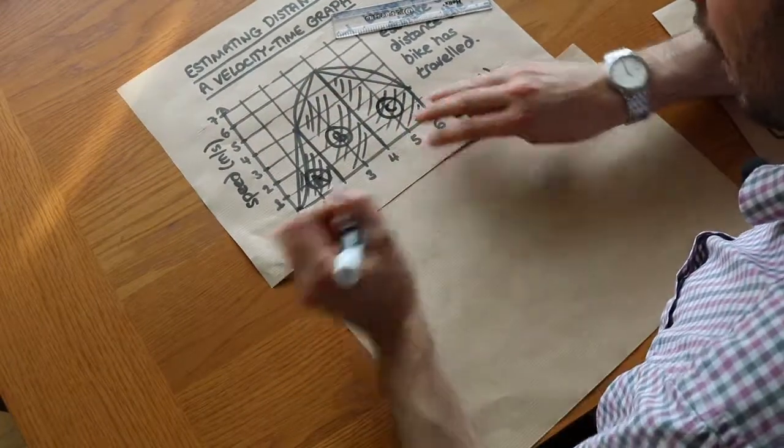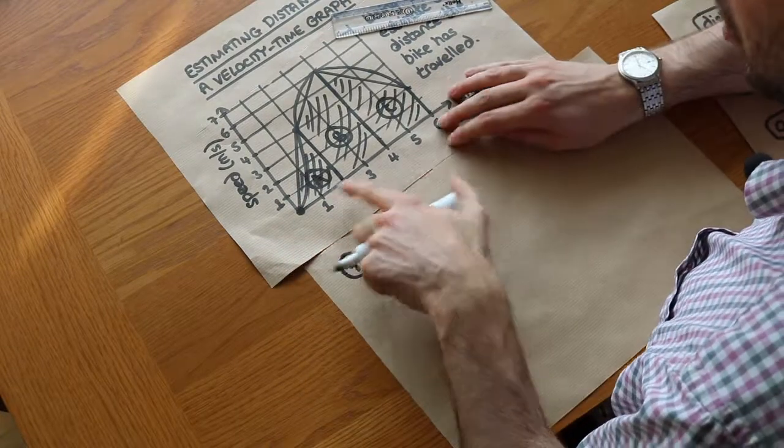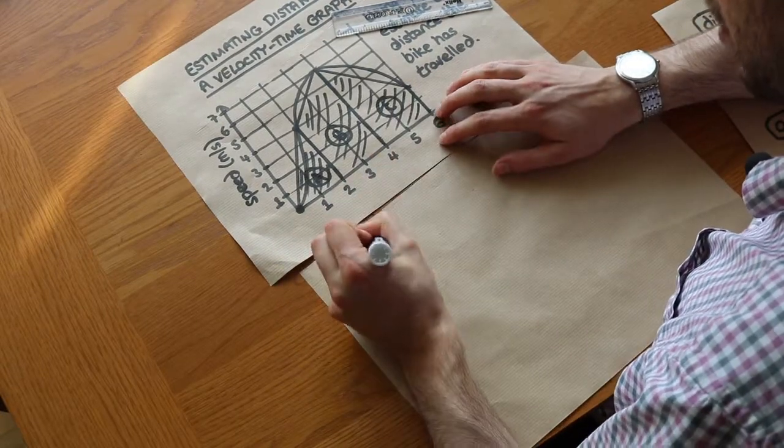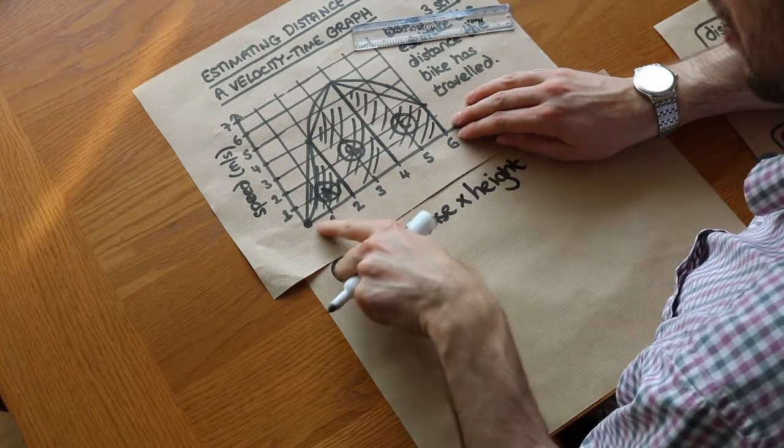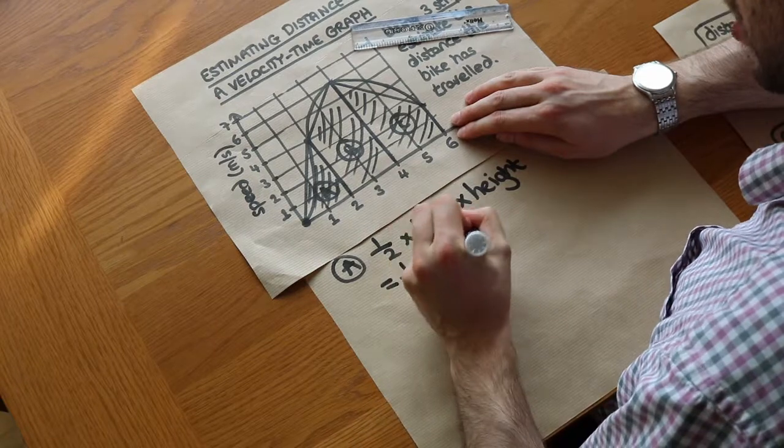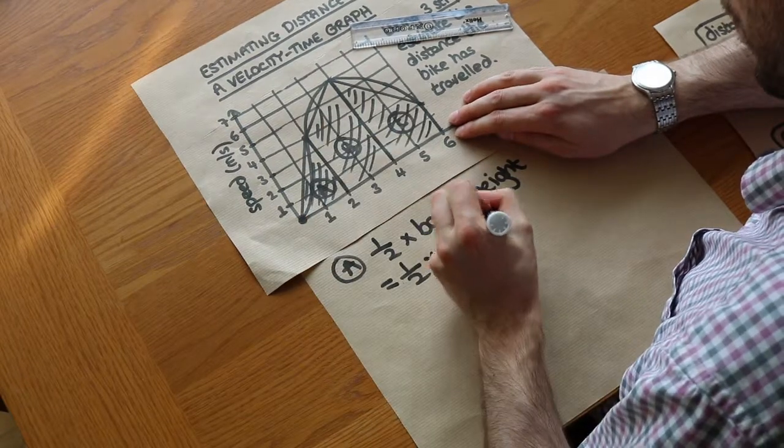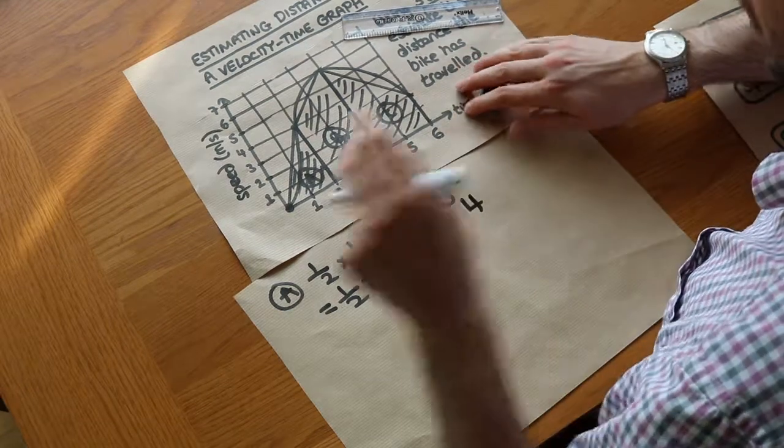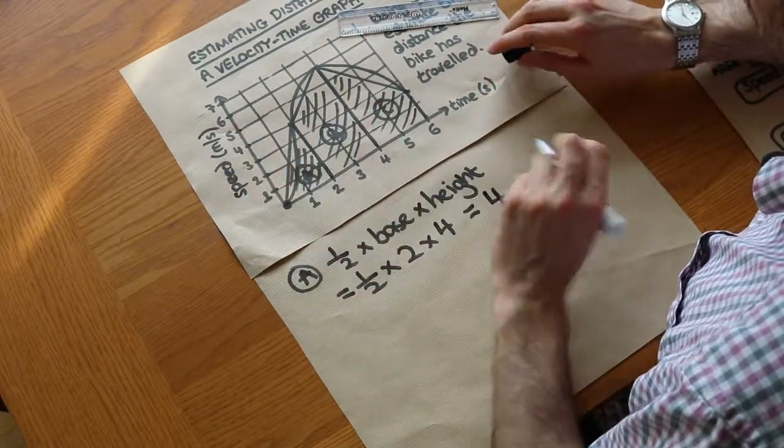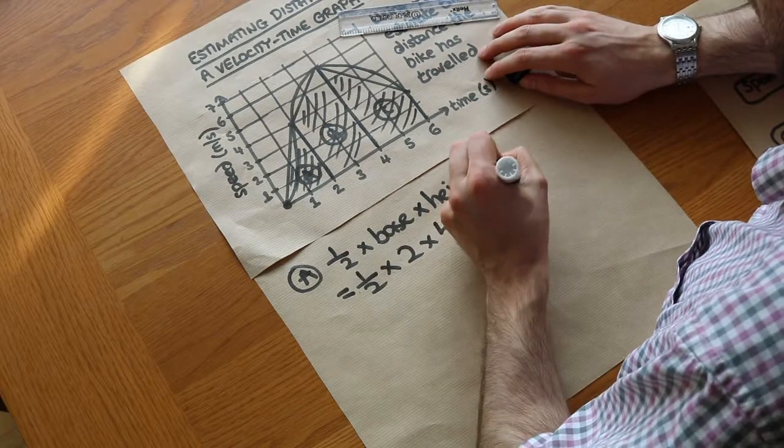So let's find the area of a first. Well that's a triangle, so we can just use half times base times height. So we're going to do half times the base of the triangle, well that's just two, times the height of the triangle, well that's four. And that gives us four. And the unit of this will be meters because we're saying the area under the graph is a distance, so it's going to be four meters.